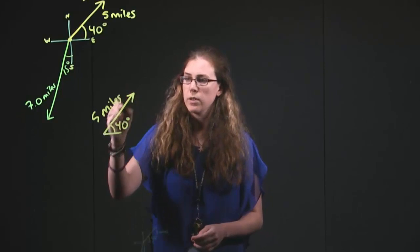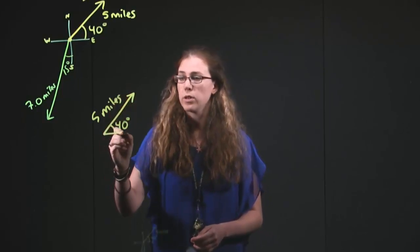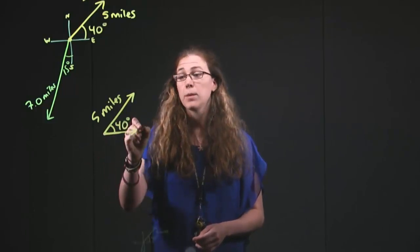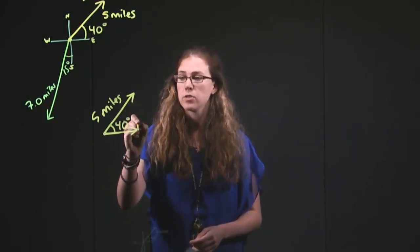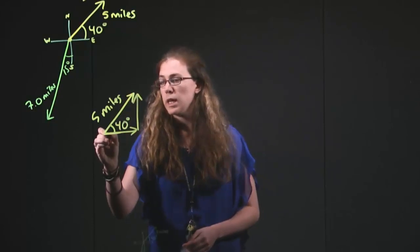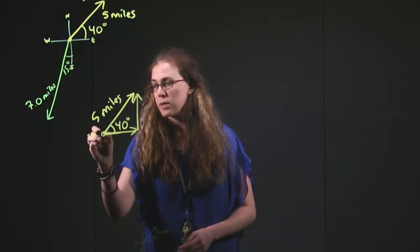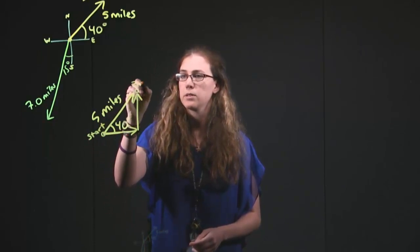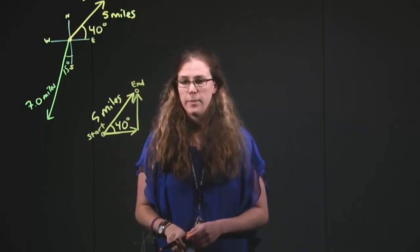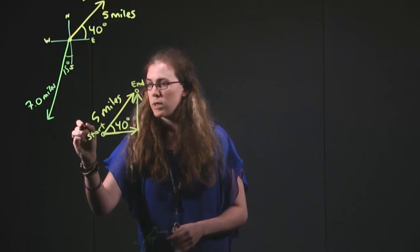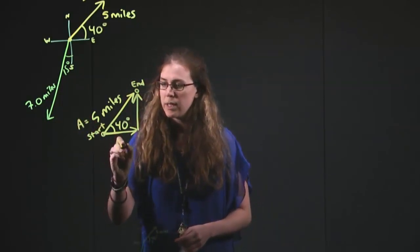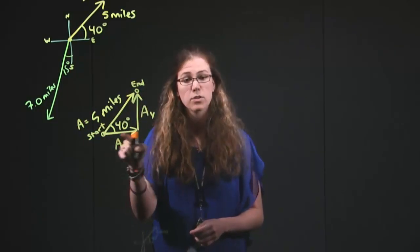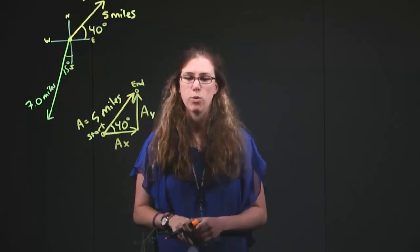We see that this arrow that we're drawing here points more to the right than to the left, so this piece points to the right, and it points more up than it does down, and so this piece points up. It goes from the very start of that vector to the very end of that vector, the pieces. So let's call this one A. That would make this Ax and this Ay, the horizontal component of it and the vertical component of it.